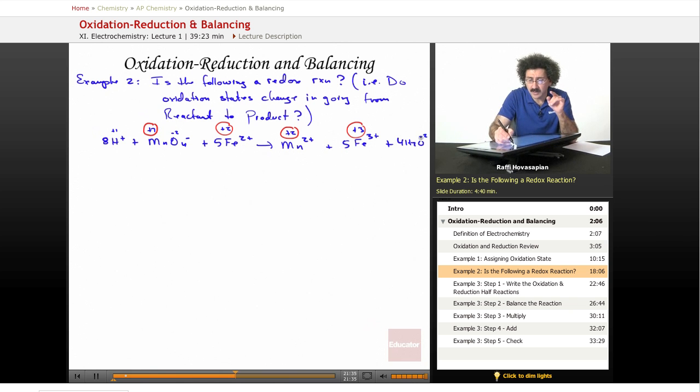Oxygen -2, hydrogen +1. This is a non-metal. Hydrogen hasn't changed. Oxygen hasn't changed. Manganese has changed. The oxidation state has gone down.